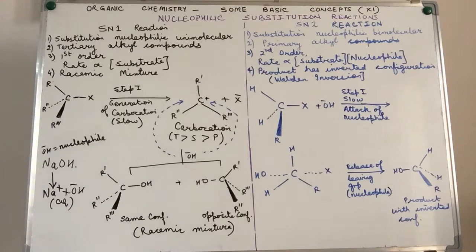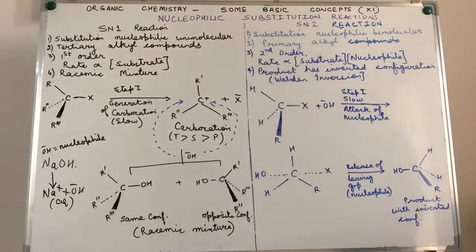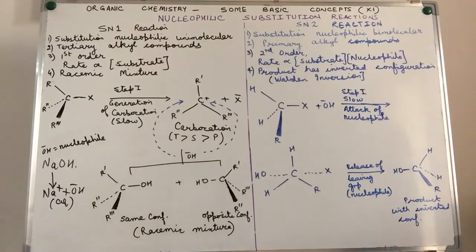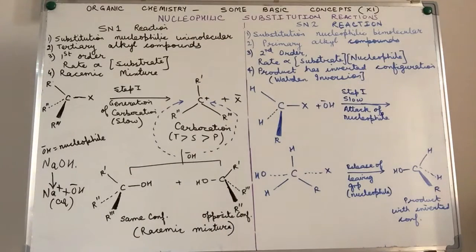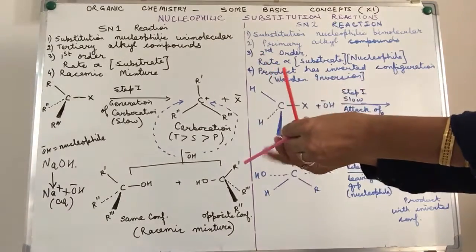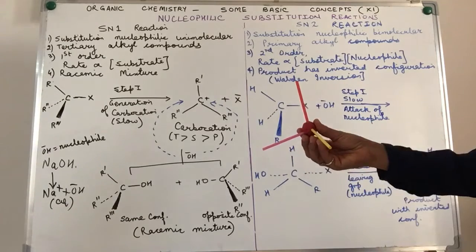Coming to SN2 reactions — substitution, nucleophilic, bimolecular. As discussed, these take place in primary alkyl compounds. Let us see the mechanism. We go back to the tetrahedral arrangement of atoms. Let us suppose our initial compound is an optical isomer.